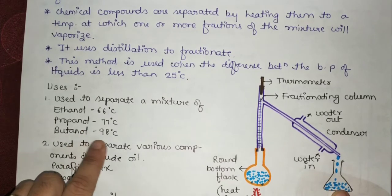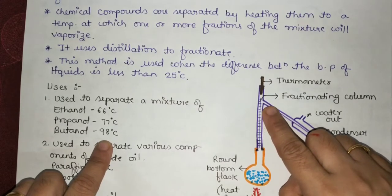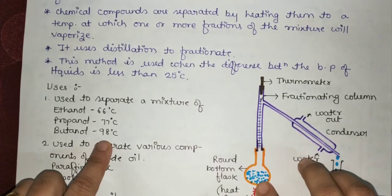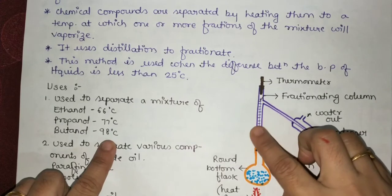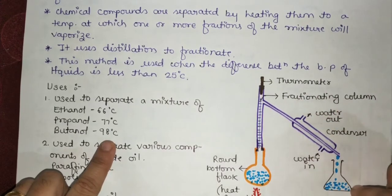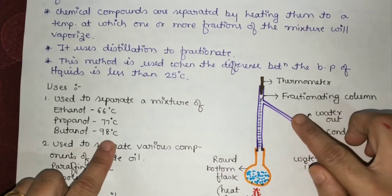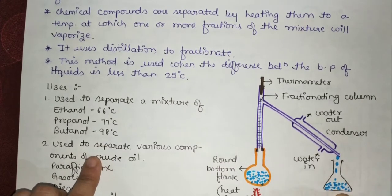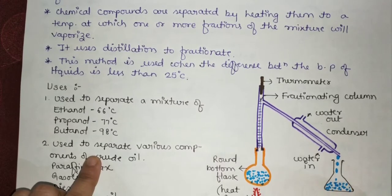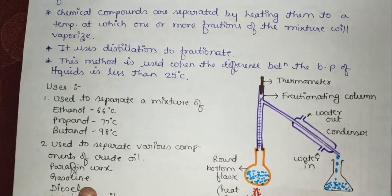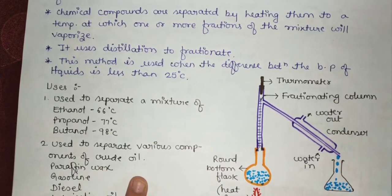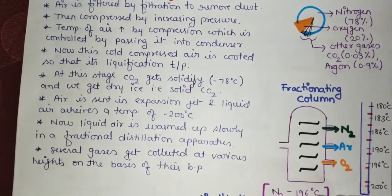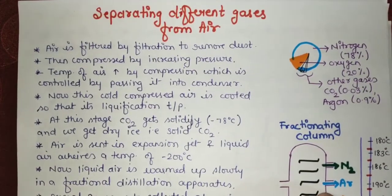Similarly, butanol starts boiling as temperature rises but is cooled back by the fractionating column until after propanol is fully separated. Then butanol vaporizes, is condensed, and collected separately. In this way, mixtures with boiling point differences less than 25°C can be separated. A similar method is used to separate crude oil. Fractional distillation is also used to separate gases from air.